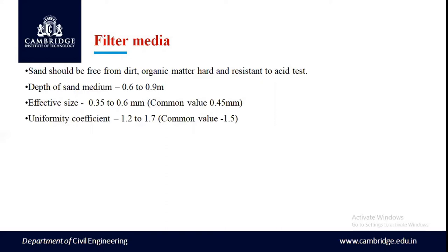What is the uniformity coefficient? This has already been discussed in my earlier session when I was talking about slow sand filters. Once again I'll define it here. The uniformity coefficient is the ratio of sieve openings. Here, the sieve opening through which 60% of the sand passes is known as D60. Similarly, the sieve opening through which 10% of the sand passes is known as D10. D60 divided by D10 is the uniformity coefficient, and that value should be in the range of 1.2 to 1.7.